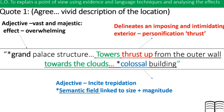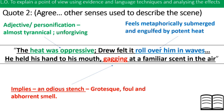There is a semantic field linked to size and magnitude and vastness — we've got 'grandness,' 'colossal,' 'towers thrust up towards the cloud.' A semantic field is where there are many words with similar meanings. Next quote: this one agrees with the second part of the statement about the writer using the other senses to describe the scene.